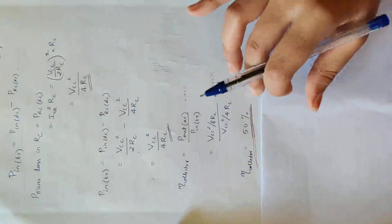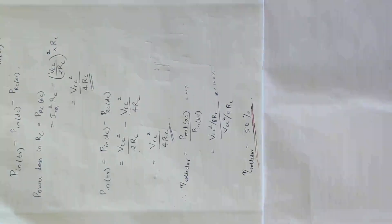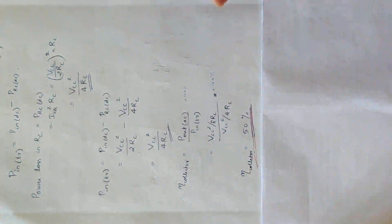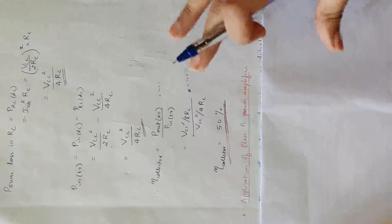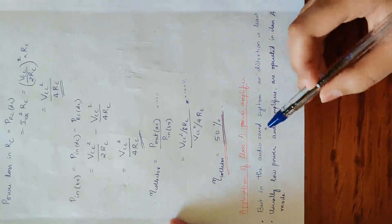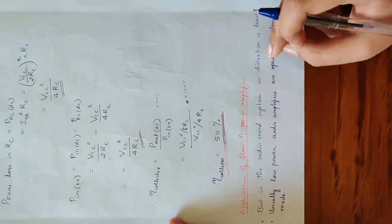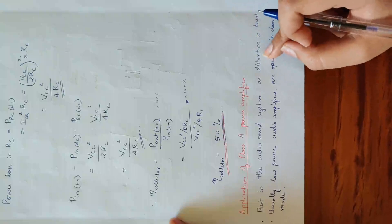Collector efficiency is 50% and overall efficiency is 25%. This is for the series-fed Class A power amplifier, that is, direct coupled Class A power amplifier. It is used in audio sound systems because distortion is minimum for Class A power amplifier.